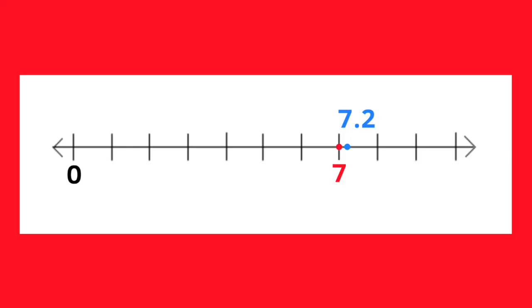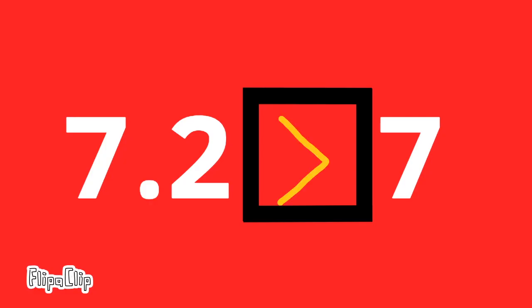Seven and two-tenths compared to 7. Seven and two-tenths is further to the right on the number line than 7, making 7 and two-tenths greater than 7.